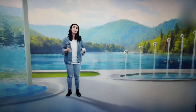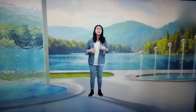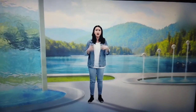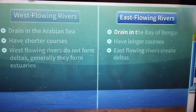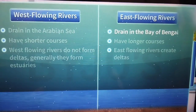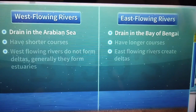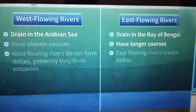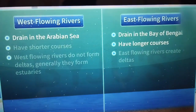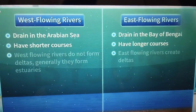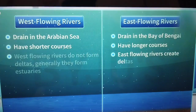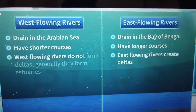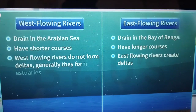The East flowing rivers flow towards the East, while the West flowing rivers flow towards the West. But apart from the direction of their flow, these rivers are different from each other in many ways. The East flowing rivers drain into the Bay of Bengal, whereas the West flowing rivers drain into the Arabian Sea. The East flowing rivers have longer courses, while the majority of the West flowing rivers have shorter courses. Another noticeable difference is that before draining, the East flowing rivers create deltas, while the West flowing rivers do not form deltas. Generally, they form estuaries.